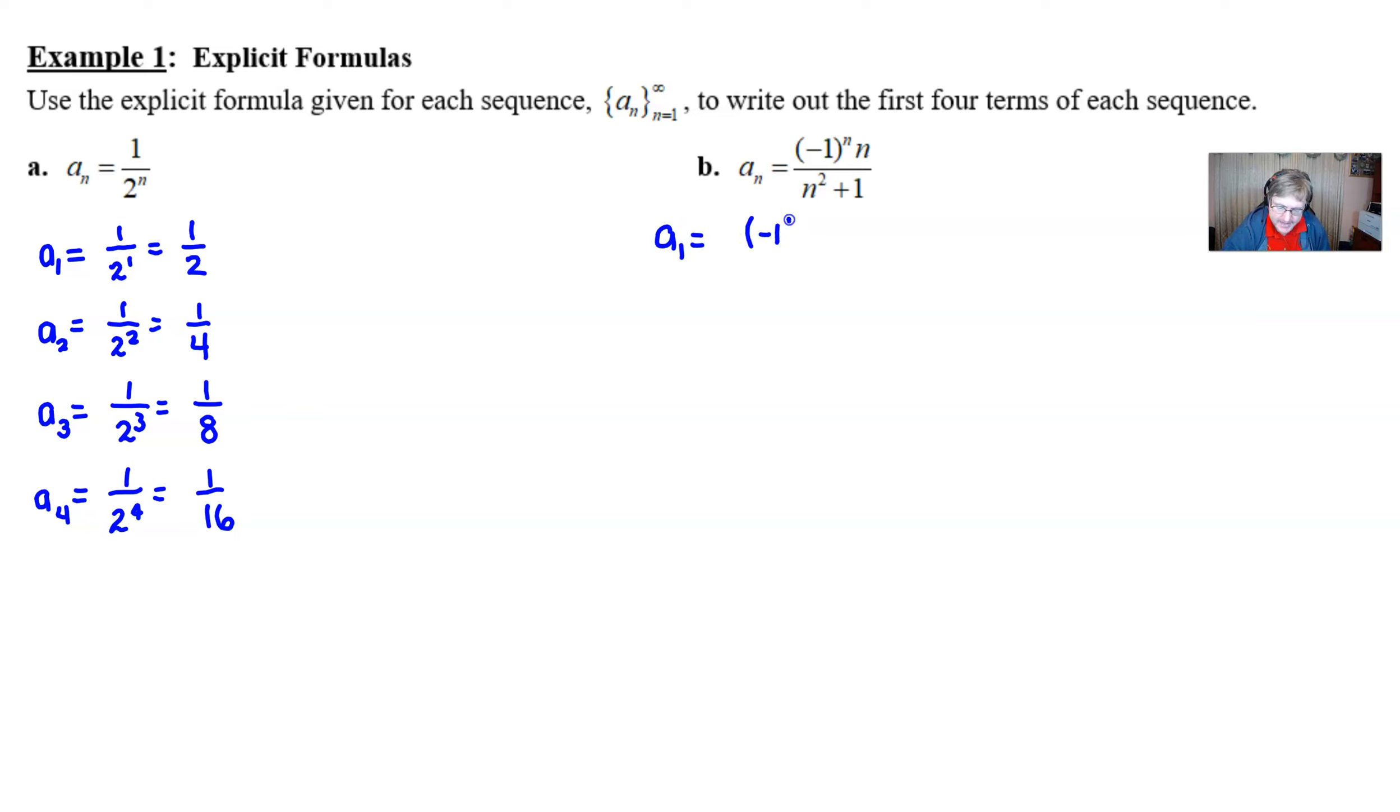Well, you've got negative 1 to the first times 1 all over 1 squared plus 1. Now, when this is all simplified, some interesting things happen. This negative 1 to the nth power, where n is 1, is just going to stay negative. And then the top is still going to be a 1. Now, I can put that negative in the top, but I'll tell you what, I'm going to just put it out in front. And the denominator is going to be 1 squared plus 1, which is 2. So your first term should have been negative half.